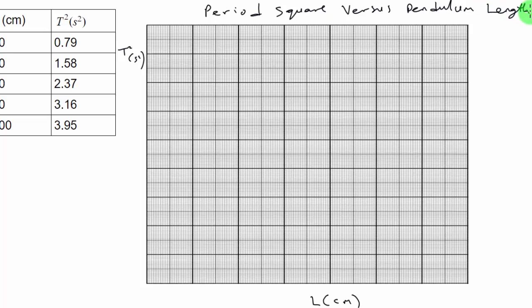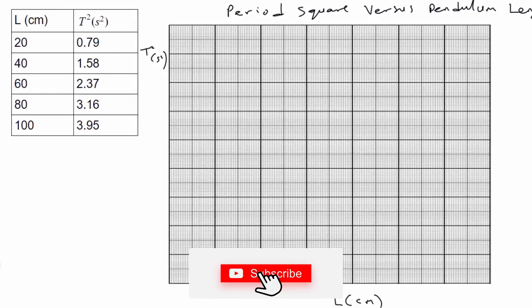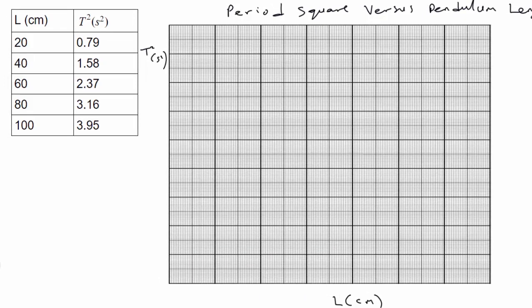Now that we've got the x label, y label, and title done, the next challenge is to define the scale of the graph. This is the most difficult aspect of graphing because figuring out the right scale will determine how large your graph will be. In most cases you are expected to have your graph covering at least half of the space on the graph paper. So we're going to use a systematic approach to figure out the scale.